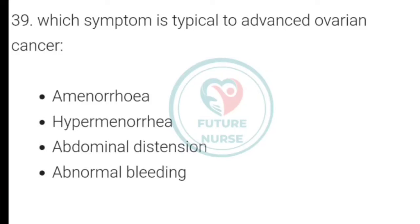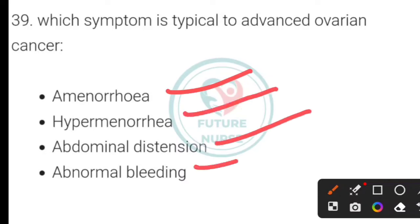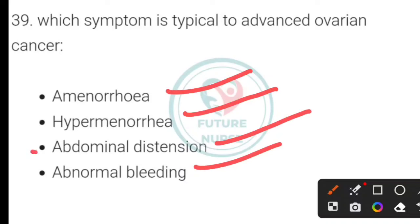Which symptom is typical of advanced ovarian cancer? Options: amenorrhea, hypermenorrhea, abdominal distension, or abnormal bleeding. The symptom typical of advanced ovarian cancer is abdominal distension — option C.